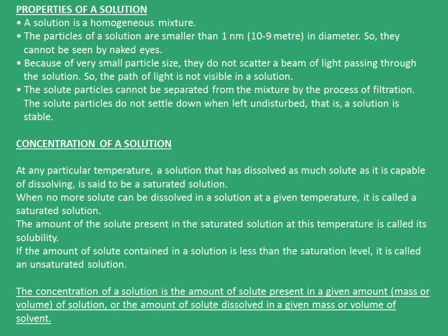Now let's see some properties of solution. A solution is a homogeneous mixture. The particles of a solution are smaller than 1 nanometre (10⁻⁹ metres), so they cannot be seen with naked eyes. Because of their very small particle size, they cannot scatter a beam of light passing through the solution, so the path of light is not visible in a solution. The solute particles cannot be separated from the mixture by filtration, and they do not settle down when left undisturbed — that is, a solution is stable.